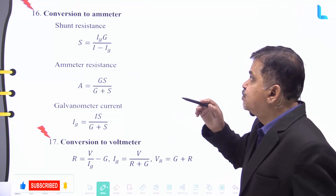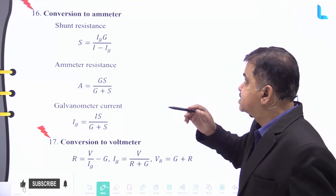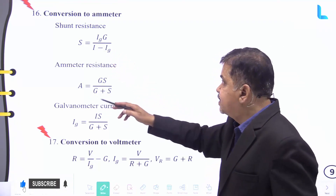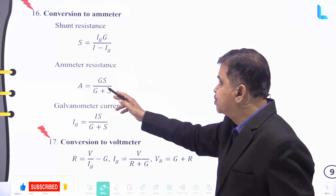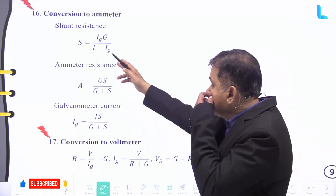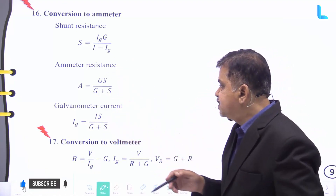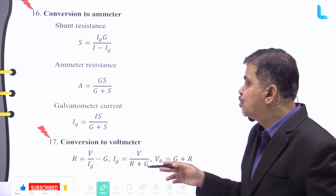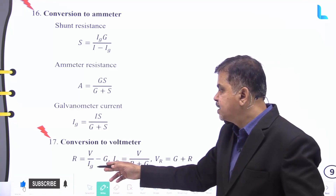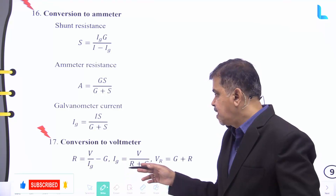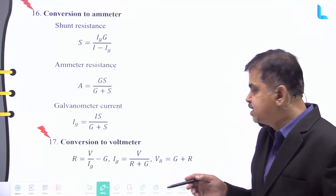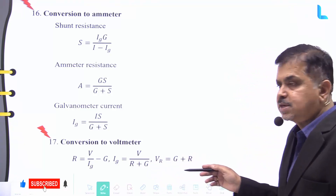For conversion to an ammeter, the shunt resistance S equals ig times G divided by (I minus ig). The ammeter resistance equals GS divided by (G plus S). The galvanometer current ig equals IS divided by (G plus S). For conversion to a voltmeter, the resistance R equals V divided by ig minus G. The galvanometer current ig equals V divided by (R plus G), and V times R equals G plus R.